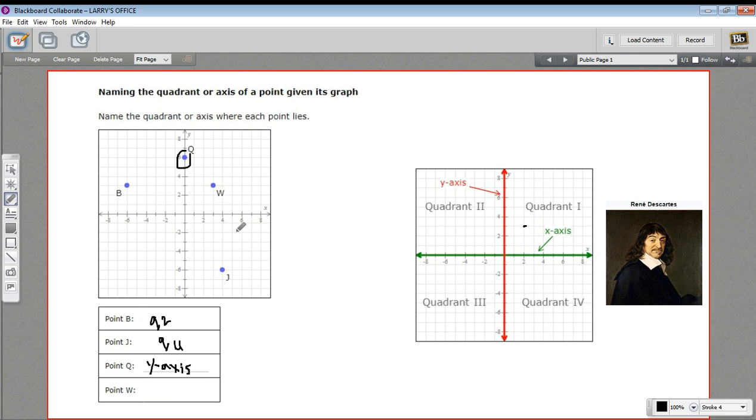And then finally, point W is right here in quadrant 1. So that is how to find the quadrant or the axis in which points lie.